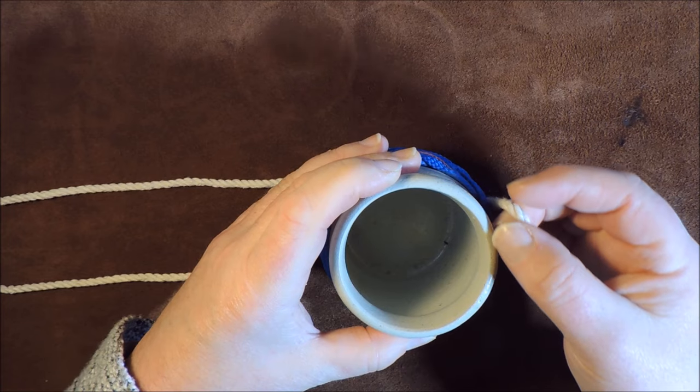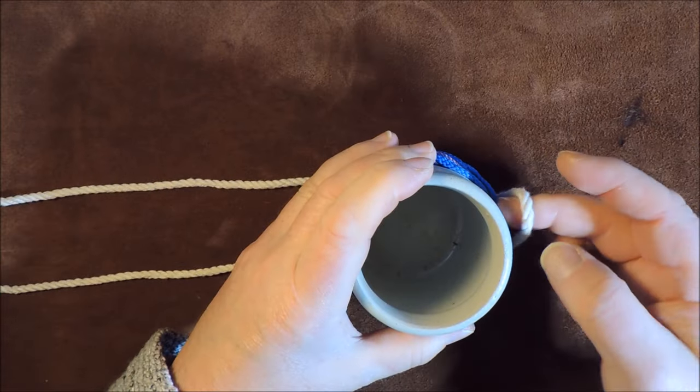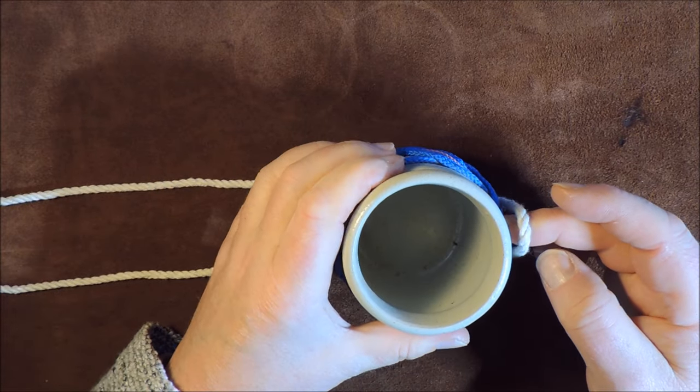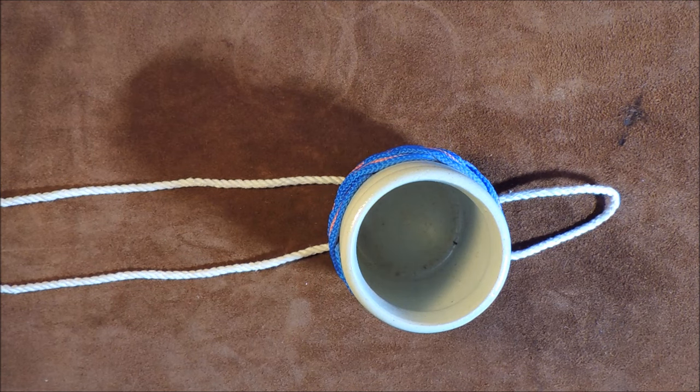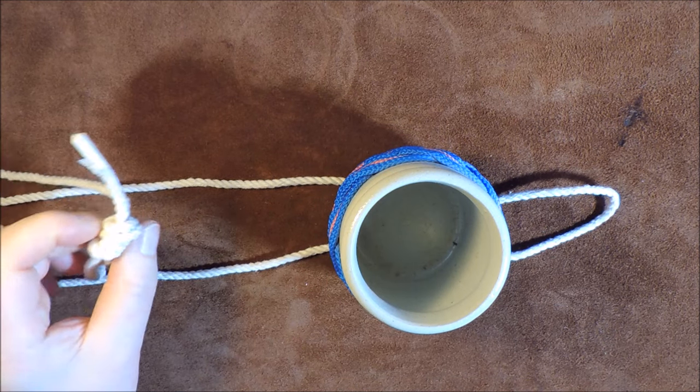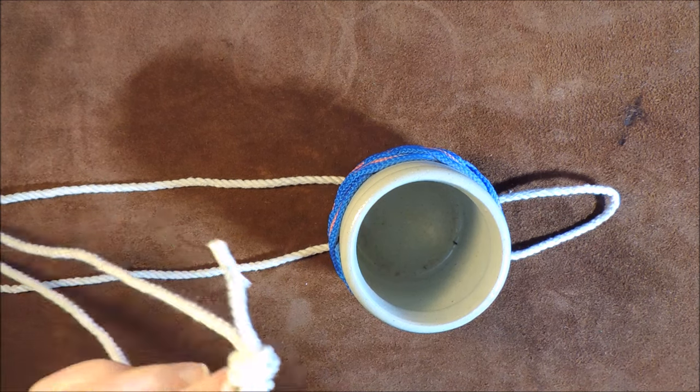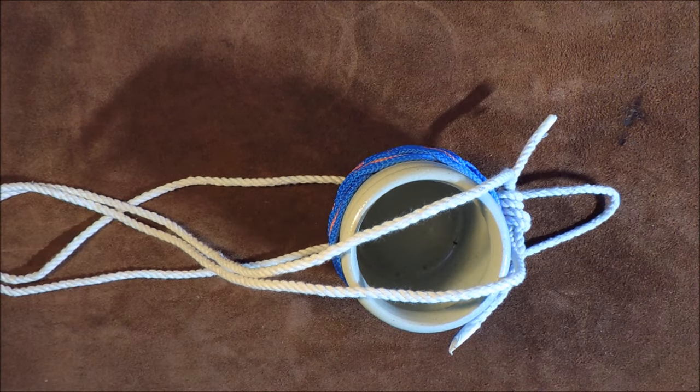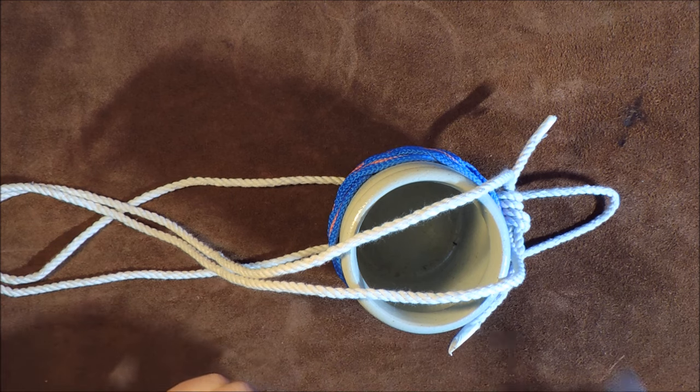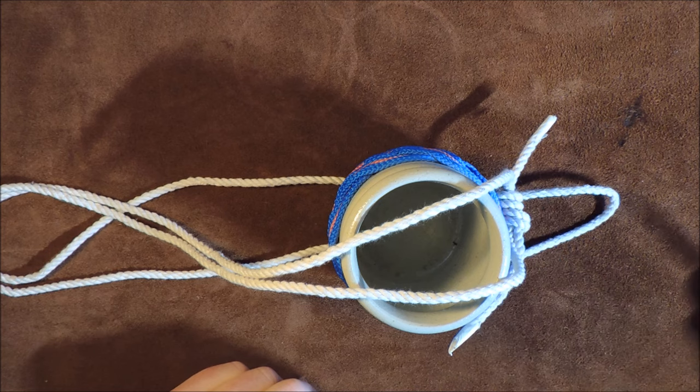So just come just below that top edge there, perhaps take it a little bit more and then there we go, just underneath that top edge there and now that I've done that, the next thing I do is I get hold of the left hand side and make sure there's no twists in it but I take the left hand side and I pass it over the top of my container there like so and then when I've passed it over the top of my barrel, I then go down through that loop at that point there.